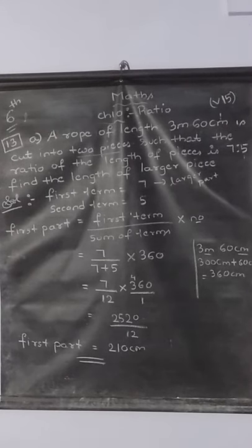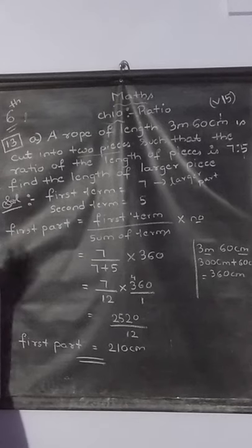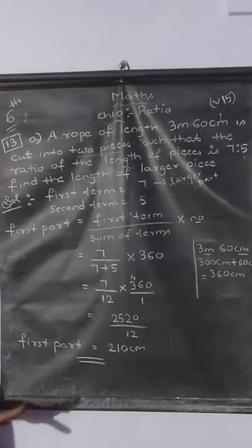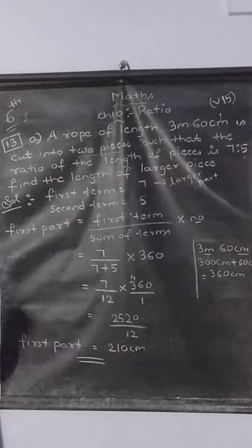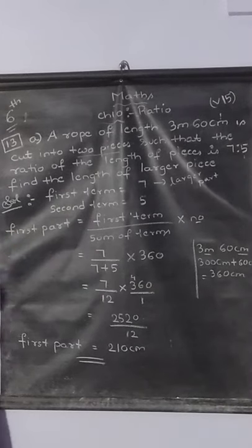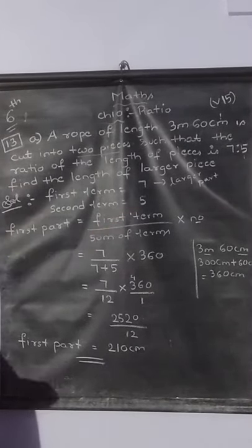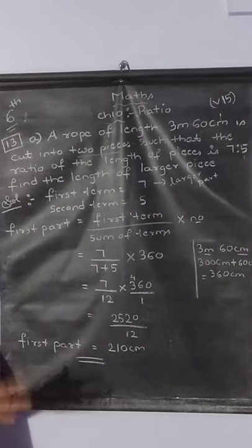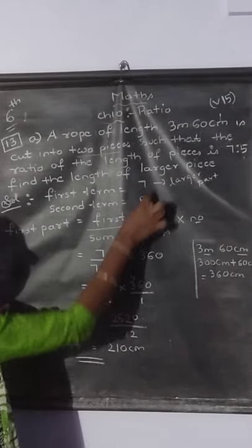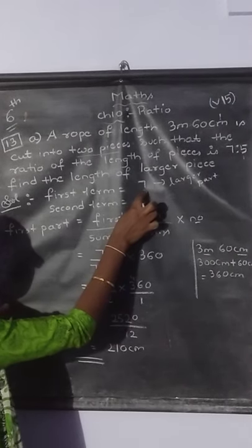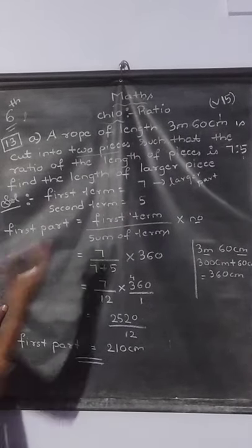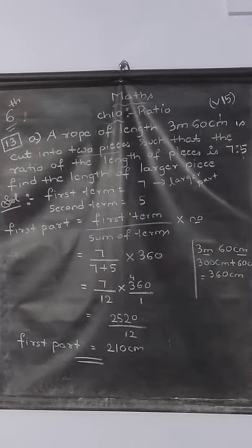Have you understood how to find it? Same as the previous question — here 180 was replaced by the total rope length of 360 centimeters. The ratio is 7 is to 5, first term and second term. They asked for the larger piece, and since 7 is larger than 5, I found the first part. So the larger part is 210 centimeters.